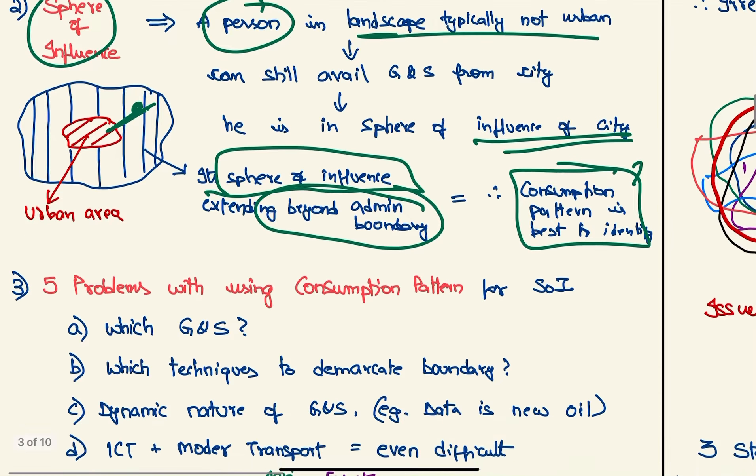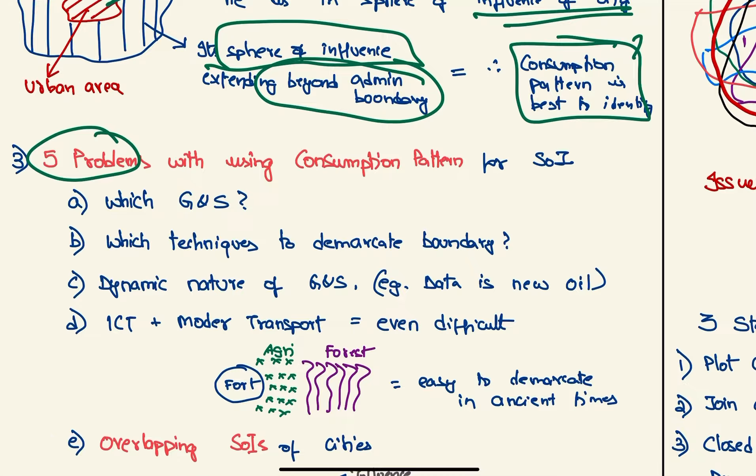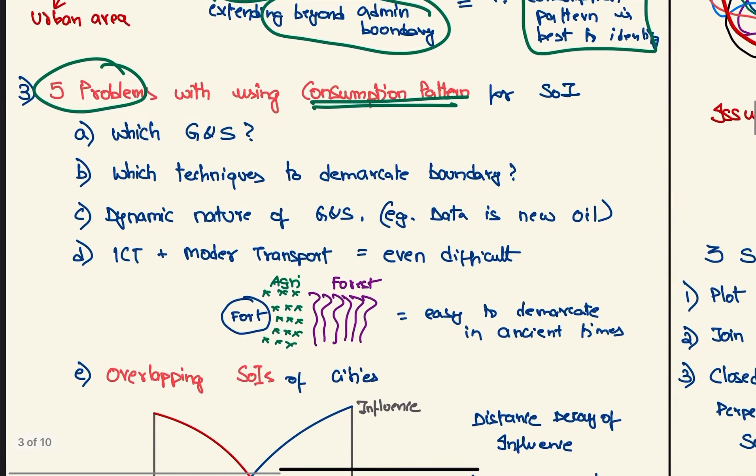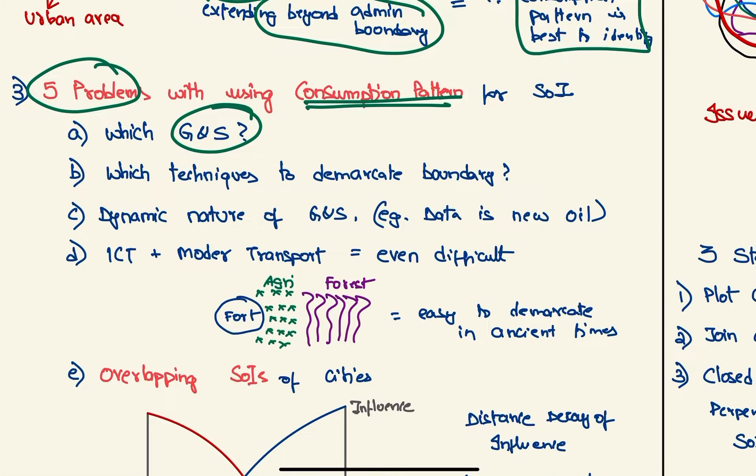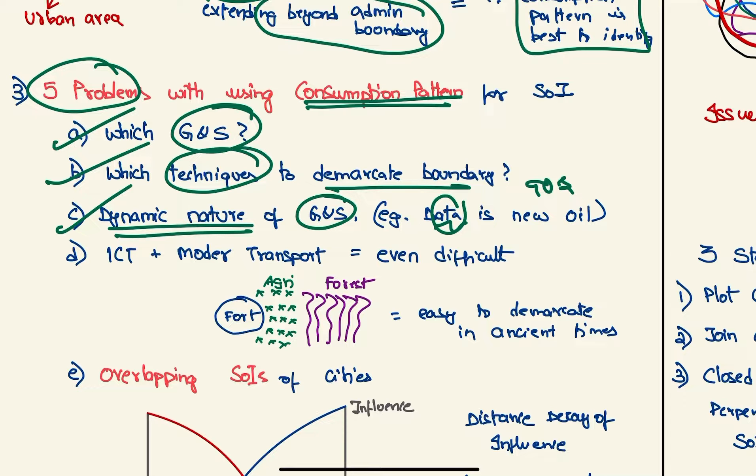Consumption pattern is the best thing to identify the sphere of influence, but there are five problems with using the consumption pattern. First of all, which goods and services to select and what techniques to demarcate the boundary. Next, the goods and services are of dynamic nature. For example, data in the 1990s: no one used to consume data, now the people who consume more data are said to be more urban.